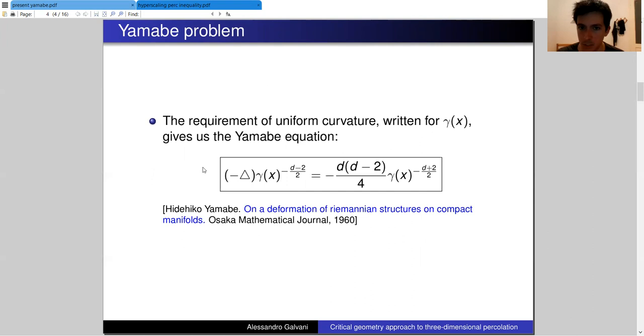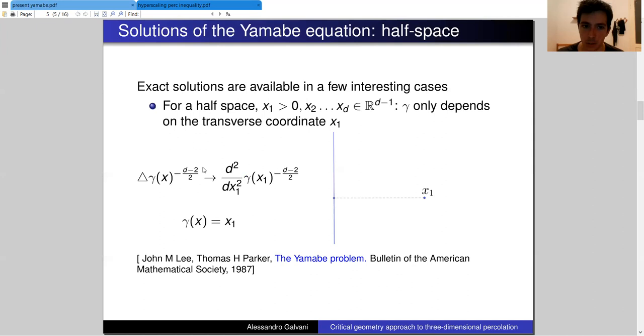Can we solve this equation? There are some cases in which this equation can be solved, generally when the Laplacian simplifies to an ordinary second derivative, thanks to some symmetry. The simplest example is that of a half-space. This solution is valid in any dimension, and here our function gamma is simply the distance from the boundary.